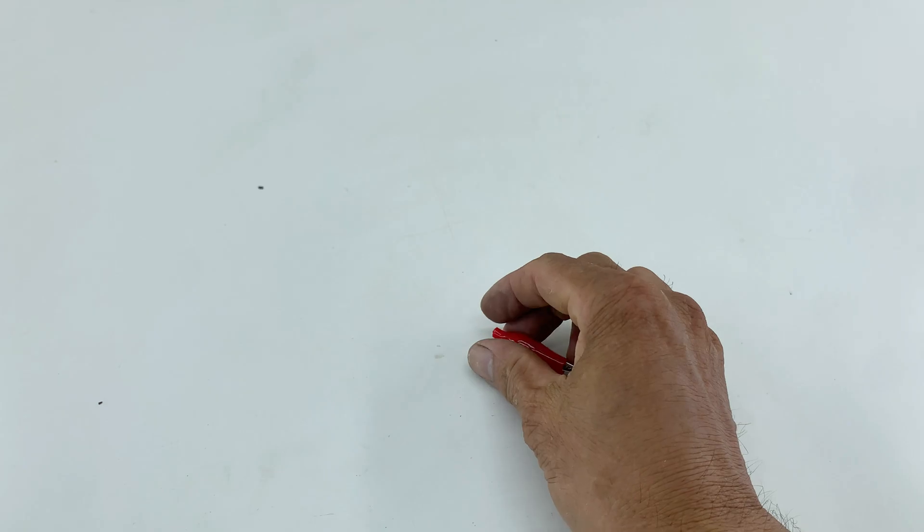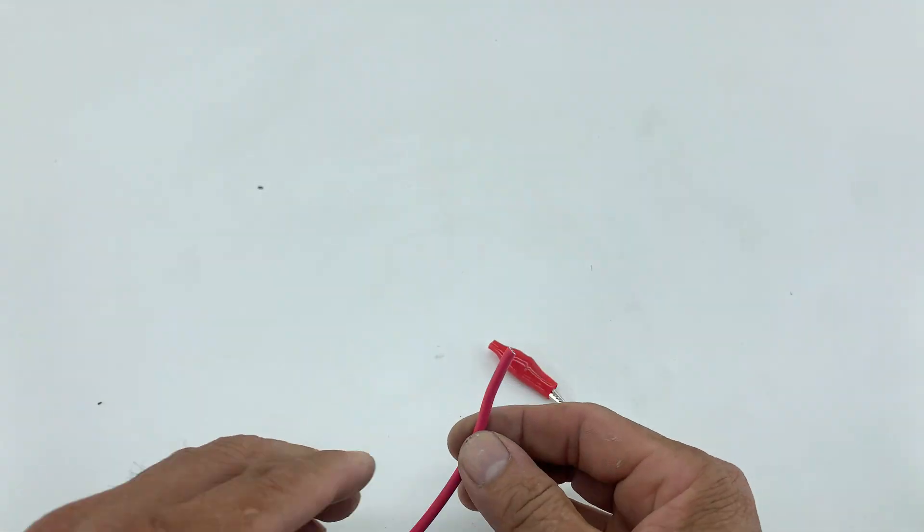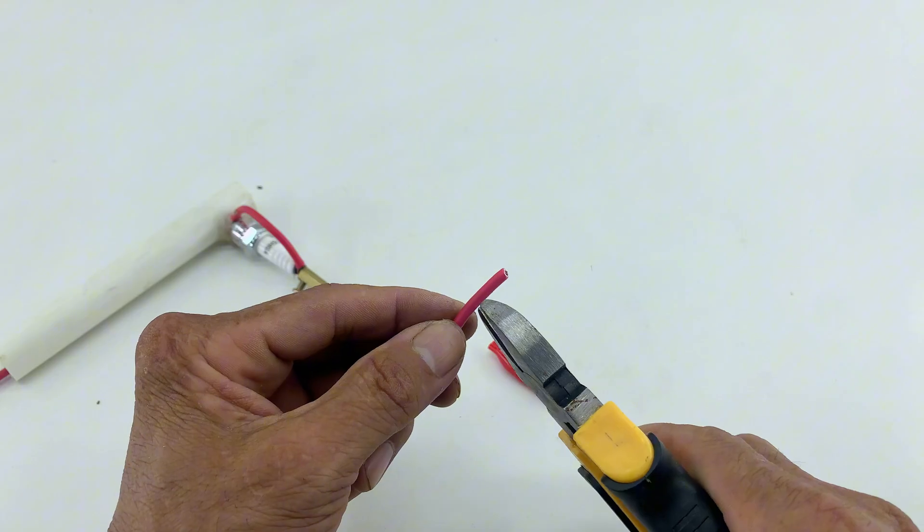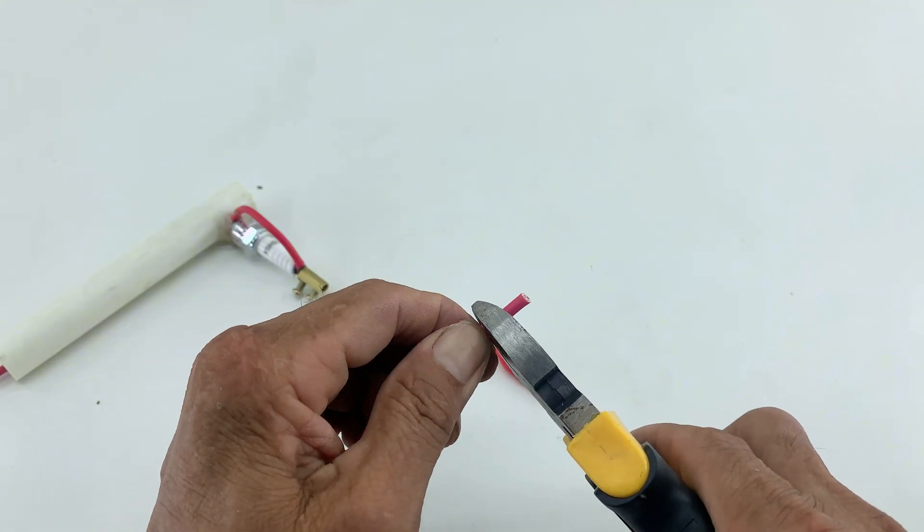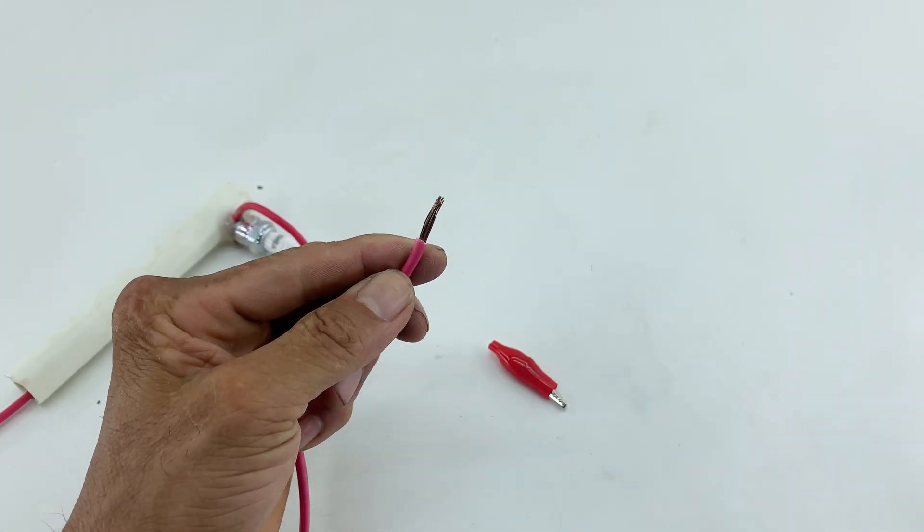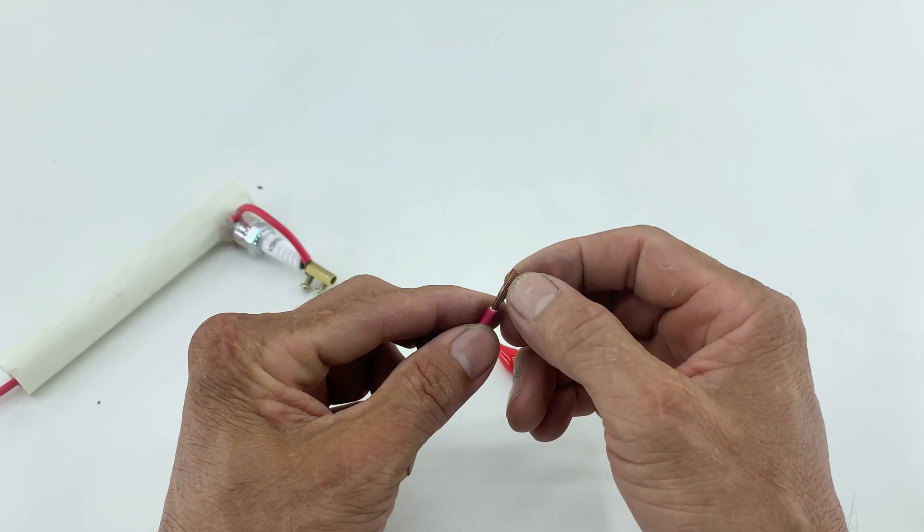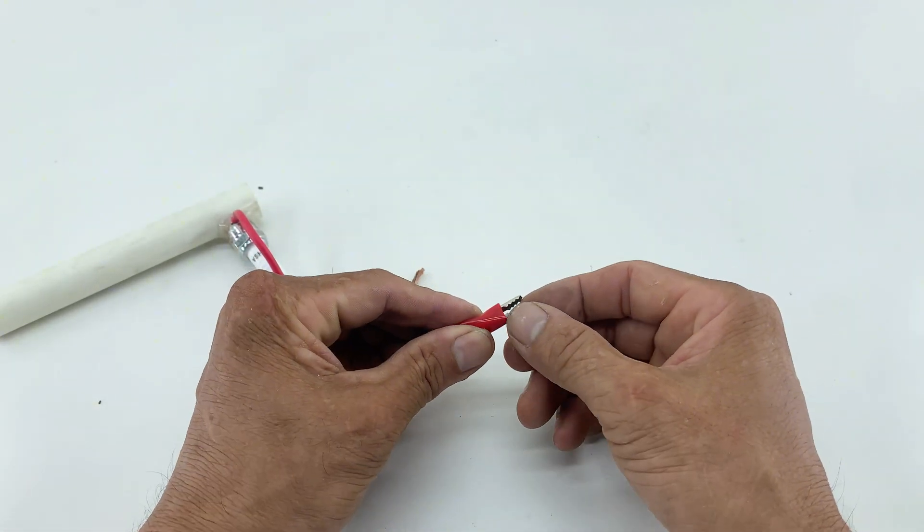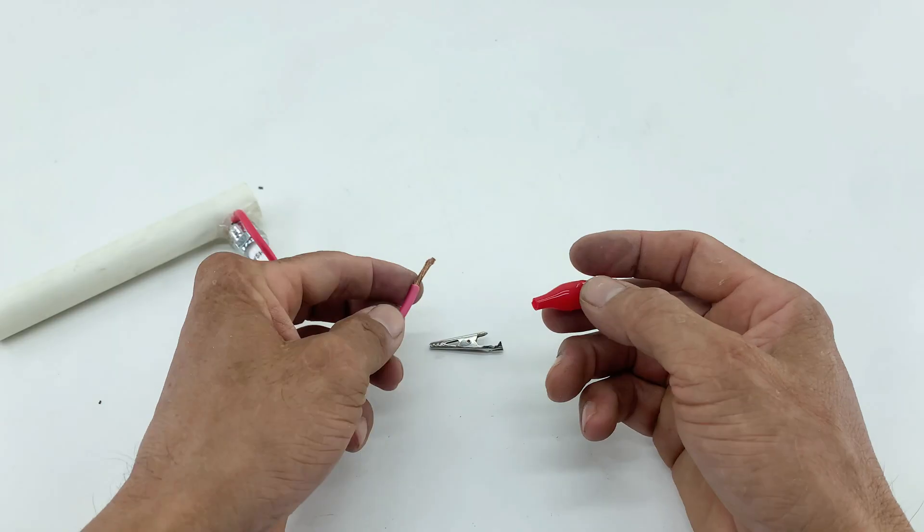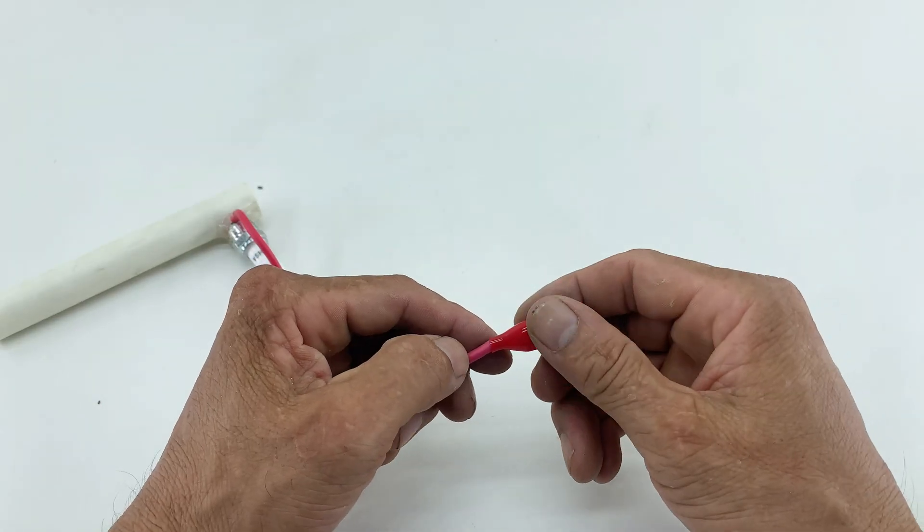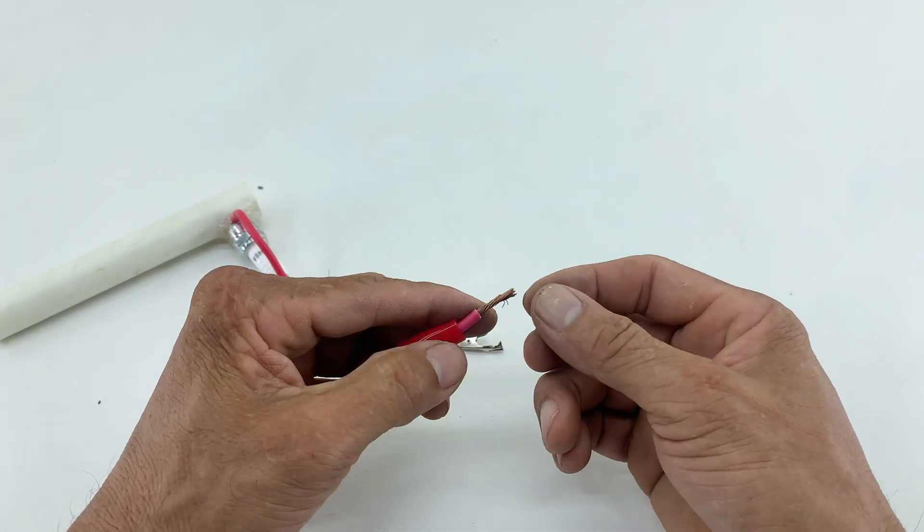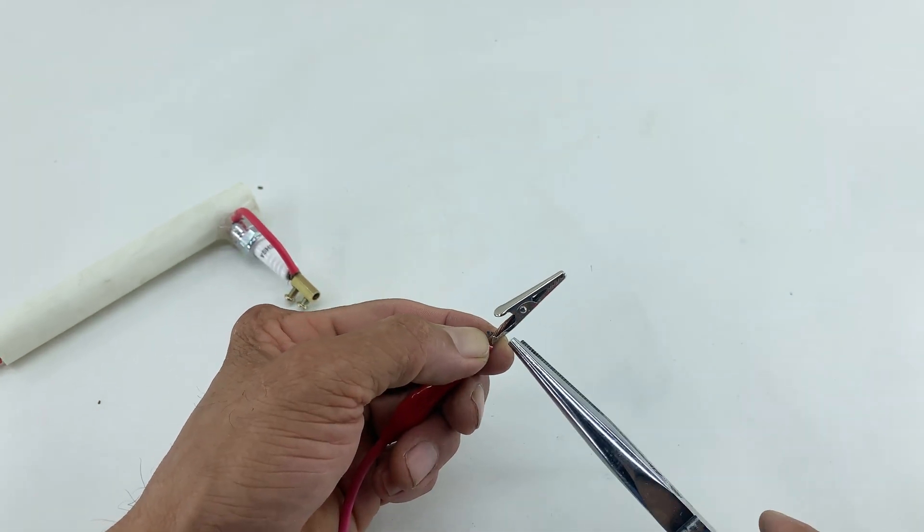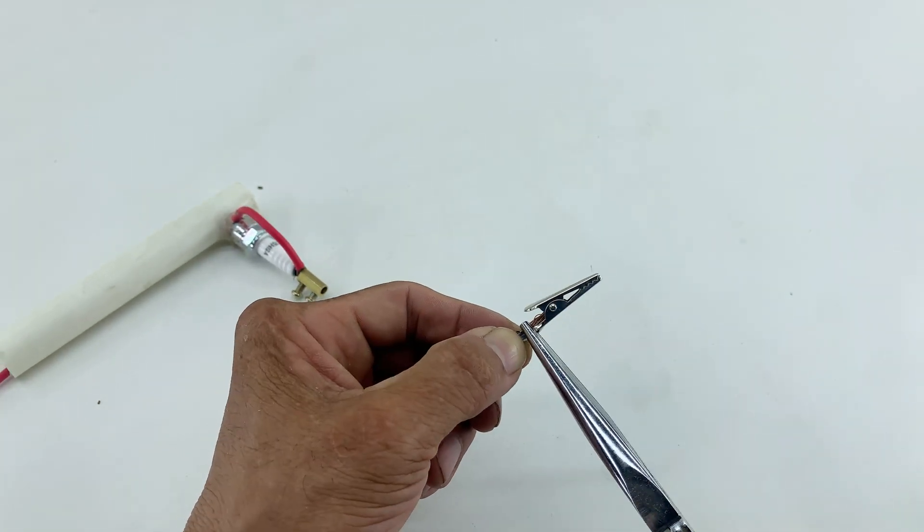I will strip one end and twist the copper strands together before attaching the red alligator clip. This will serve as one of the main leads in the circuit.